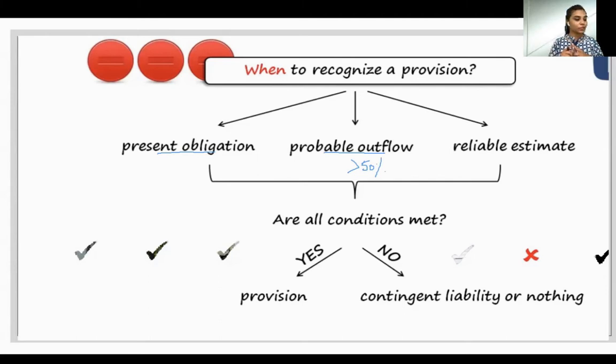Moving on to the third condition which is called reliable estimate. Reliable estimate means that you need to have an estimate. How do you get this? You will either take an expert opinion or you can understand what could be the measurement of that particular cost, or you can also understand from your past experience.